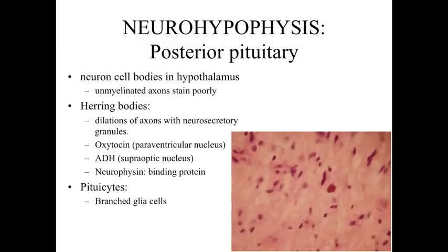Within the neural hypophysis, the posterior pituitary, we don't see the neuronal cell bodies because they sit within the hypothalamus. What we see are unmyelinated axons, which stain relatively poorly and appear very pale. We may see some enlarged regions called Herring bodies — dilations of the axons where the neurosecretory granules are located, like the tips of axons where the secretory product waits to be released. The processes from cells in the paraventricular nucleus release oxytocin, while cells from the supraoptic nucleus release ADH. In both cases, the cells also release neurophysin, a binding protein to help transport oxytocin or ADH throughout the body.